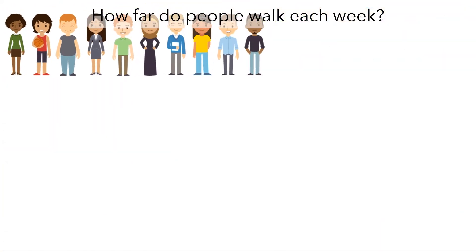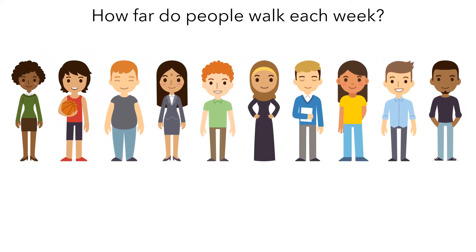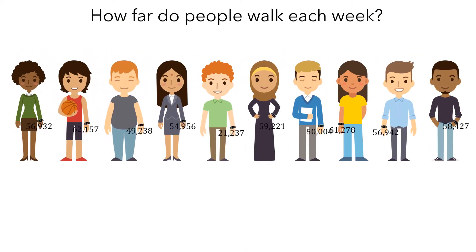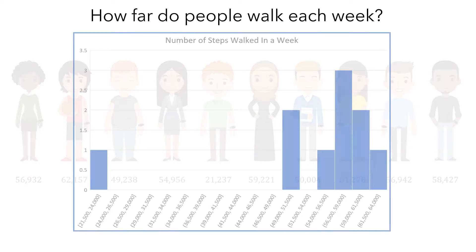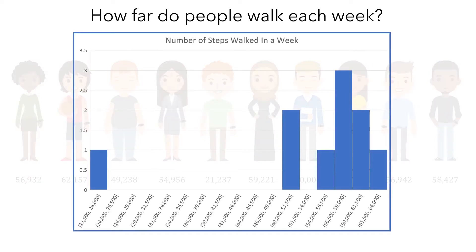And when we take a sample from the population, we can see this natural variation from the population also appearing in the sample. And we can estimate this natural variation using measures like the standard deviation or interquartile range.